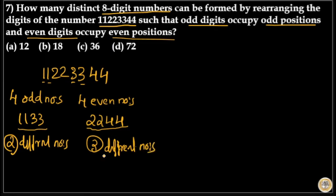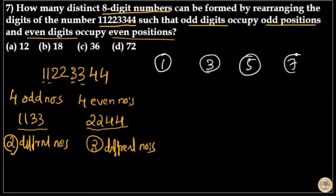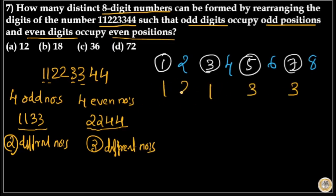We have to find how many different eight-digit numbers can be formed by placing odd numbers on odd places and even numbers on even places. For an eight-digit number, the four odd places are the 1st, 3rd, 5th, and 7th positions, and the four even places are the 2nd, 4th, 6th, and 8th positions. So odd numbers 1,1,3,3 go on odd places and even numbers 2,2,4,4 go on even places.